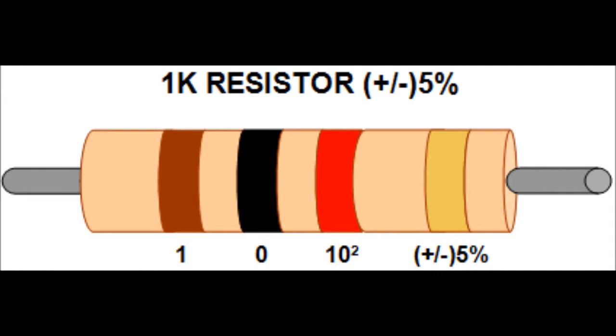Usually the band will be either gold, meaning a maximum 5% error, or silver, indicating a maximum 10% error. A resistor with no fourth band will have a maximum of a 20% error between its documented value and its actual resistance.